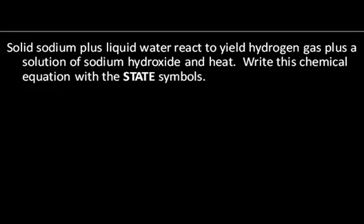The state symbols are the symbols that let us know what phase the different elements and compounds are across the chemical change. We have gas, that's a liquid, solid, and if something's in solution, we use AQ for aqueous. So those are our state symbols.